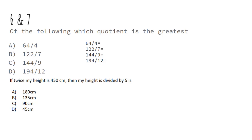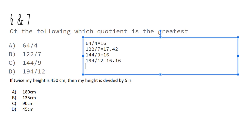So questions six and seven: which of the following quotient is the greatest? So 64 divided by 4 is 16, and 122 divided by 7 is 17.42, and then 144 divided by 9 is 16, and 194 divided by 12 is 16.16. So this would mean that B is the answer.